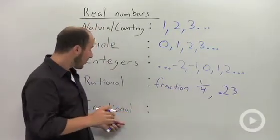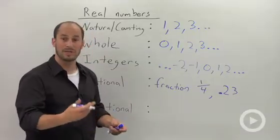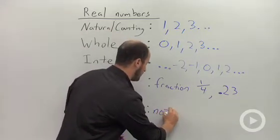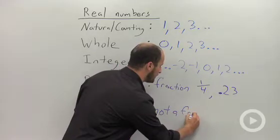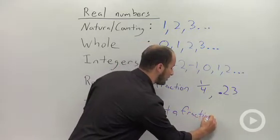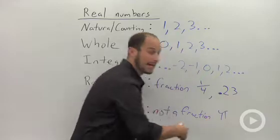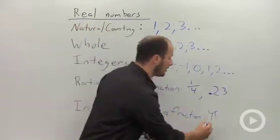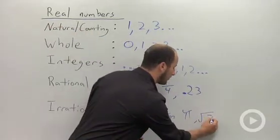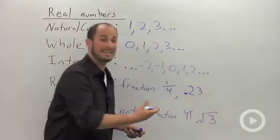The last category is irrational numbers, which can't be written as a fraction. Examples include pi - remember pi from geometry - or the square root of 3, anything like that.